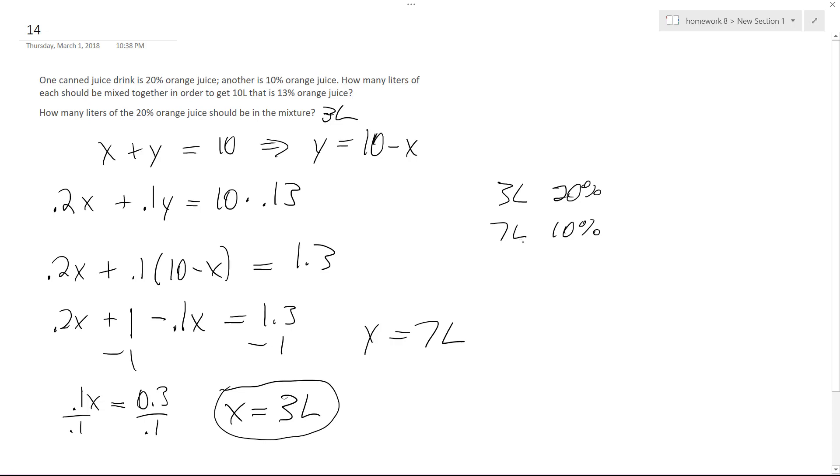So 3 times .2 is .6, plus 7 times .1 is .7, gives us .13. So that works out. So 3 liters is what you need for the 20%, and then 7 liters of the 10%.